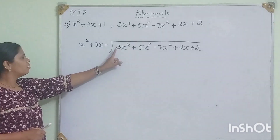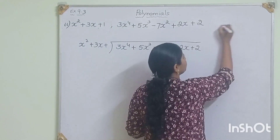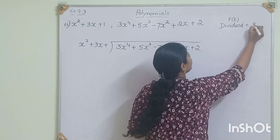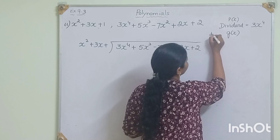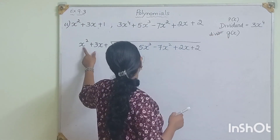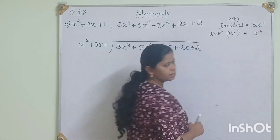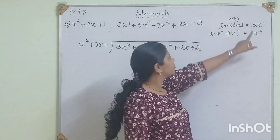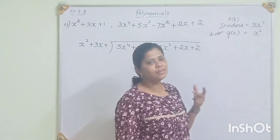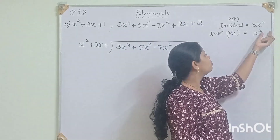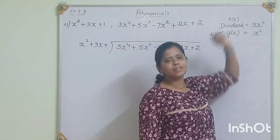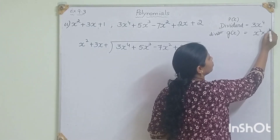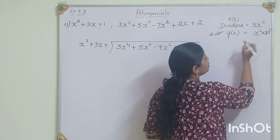The first term of the dividend p(x) is 3x to the power of 4. The first term of the divisor g(x) is x squared. Comparing the degrees: x to the power of 4 versus x squared — the degree of the dividend is more, so we can divide. We need to find what to multiply to get 3x⁴. x squared is there; to get x⁴ we multiply x squared. But the coefficient is 1 here and 3 is needed, so we multiply by 3x squared.